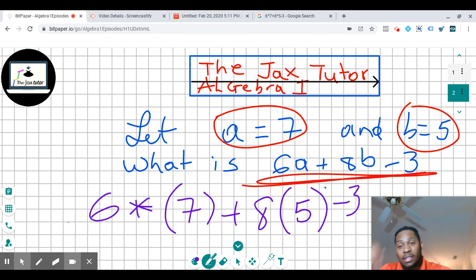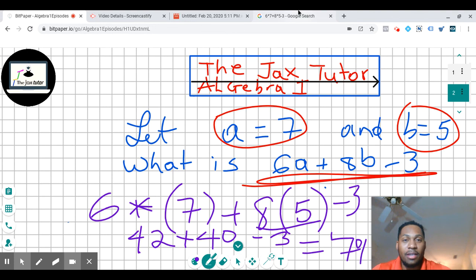So now, what is 6 times 7 is 42, plus 8 times 5 is 40, minus 3. So 42 plus 40 is 82, minus 3 is equal to 79. As you could probably see, I already went on in the calculator and calculated this.